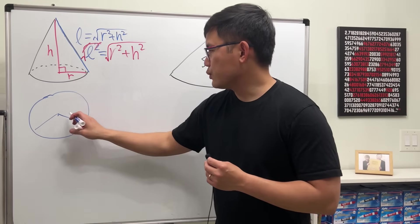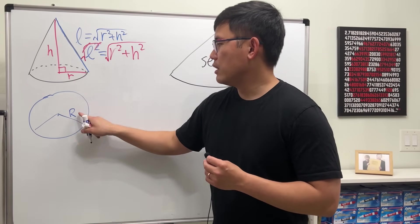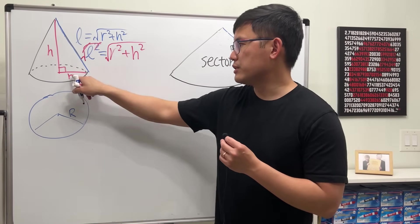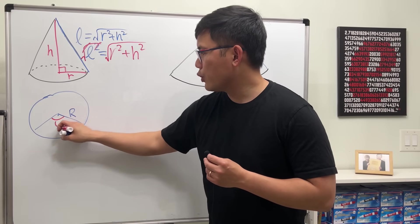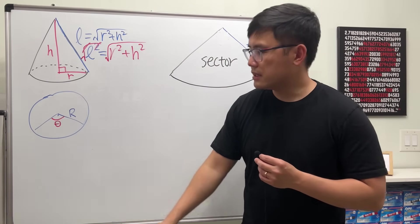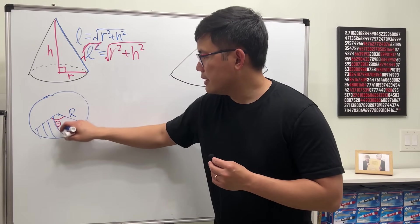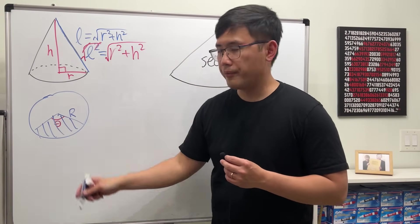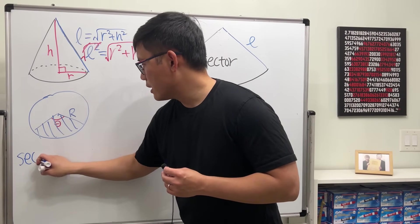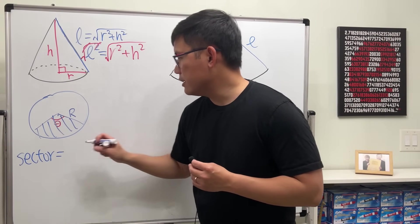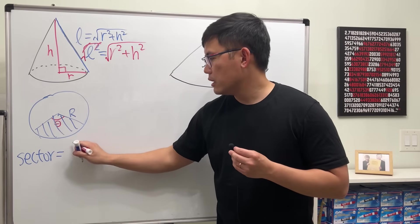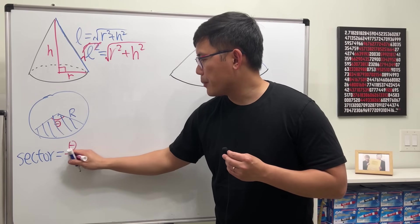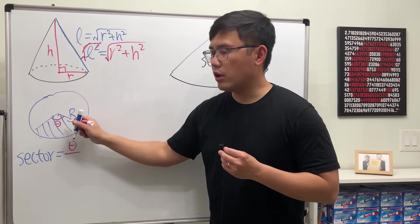We need two things. First, we need the radius of the circle. I put on capital R because I used little r right here already. And we need to know the angle right here because this sector is just a small portion of the whole circle.